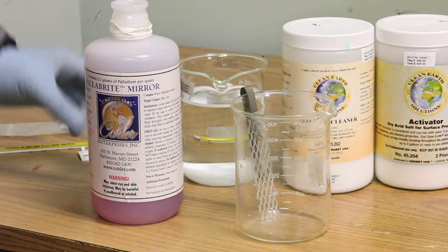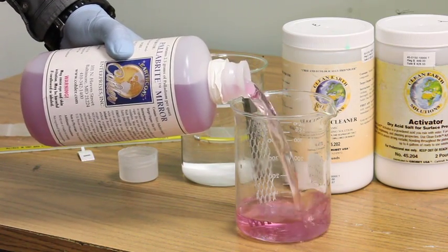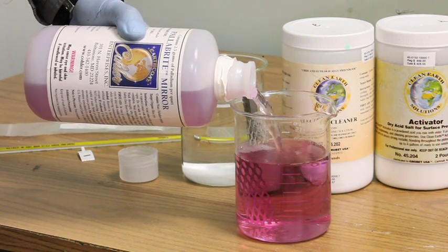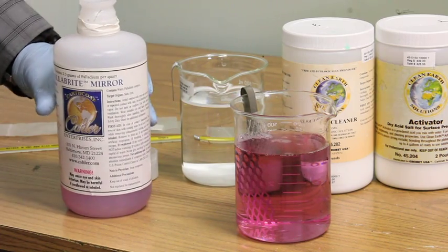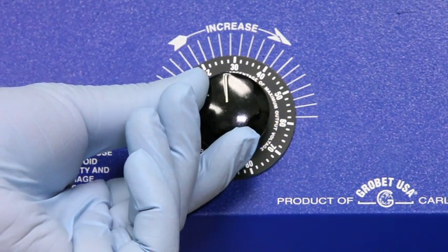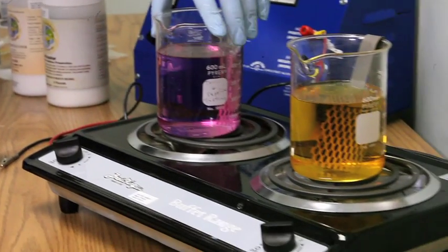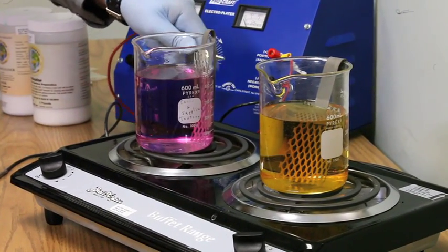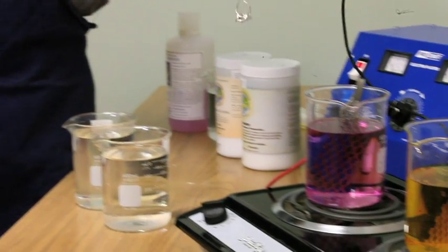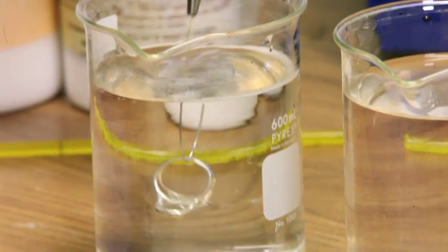If you are allergic to nickel, you can use a palladium solution with a platinized titanium anode at 3 volts as well. Just heat the palladium solution to 125 degrees first. Then remove and rinse in distilled water.